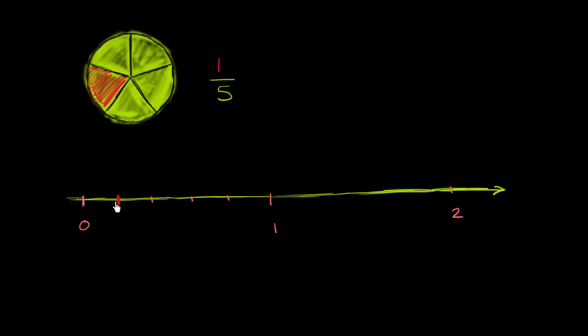Between 0 and 1, I've traveled one out of the five equal sections towards one. And actually, let me make it a little bit neater than that, make the equal sections look a little bit better. 1, 2, 3, 4, 5.